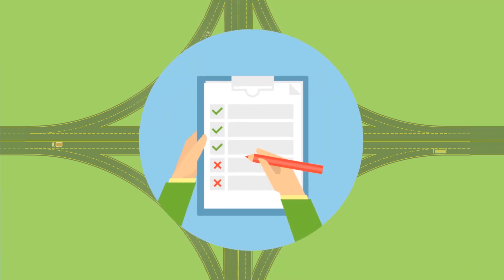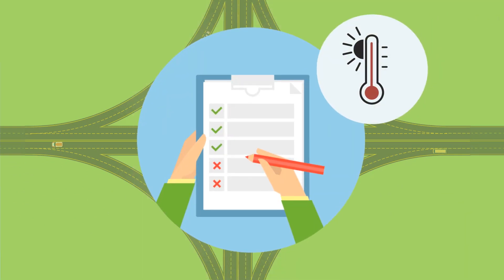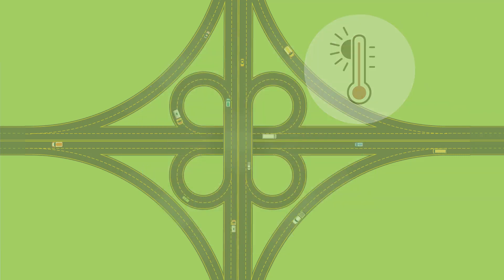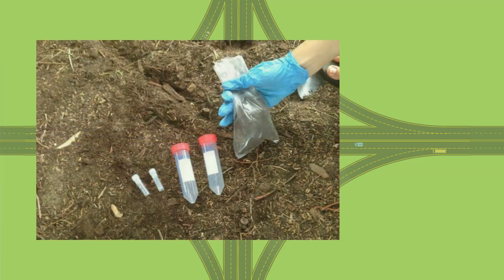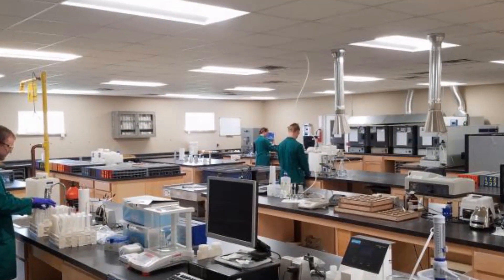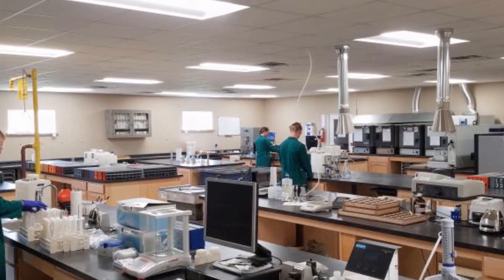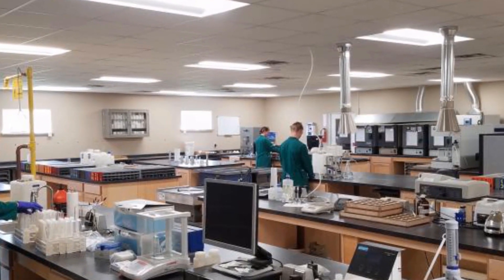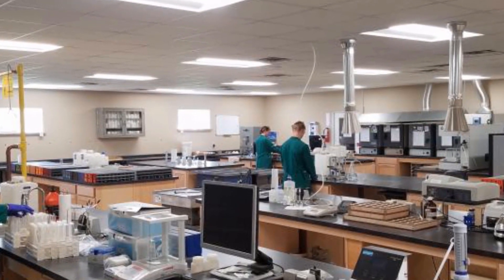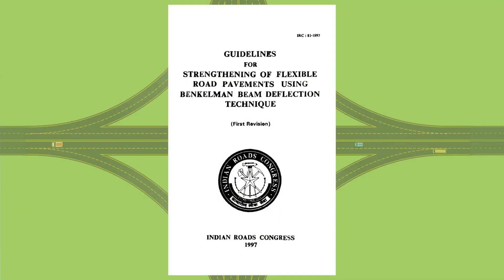During the survey, the pavement and atmospheric temperatures are recorded at frequent intervals. Soil samples are also collected and tested in the lab for moisture content and plasticity index. All these data are collected and then processed to get the characteristic deflections.